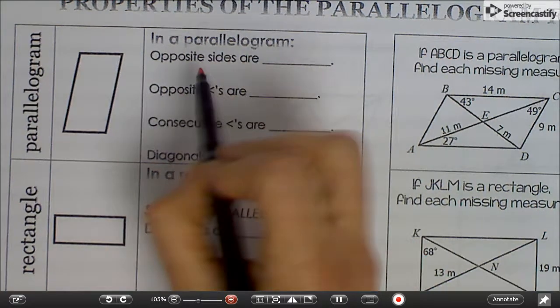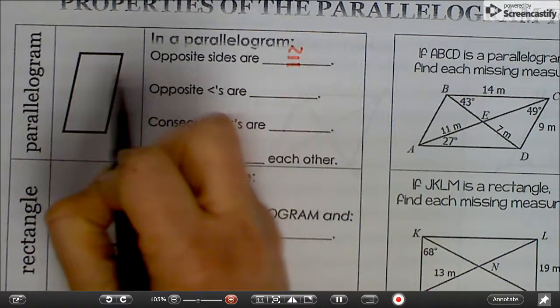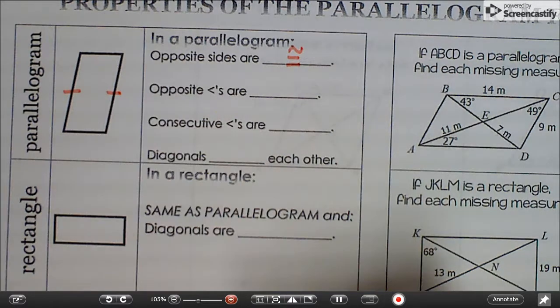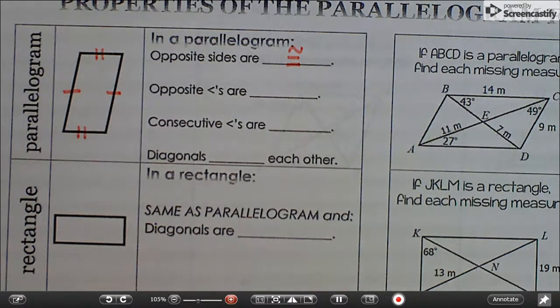So in a parallelogram, opposite sides are congruent. Opposite means the ones across from each other like that, and these are also congruent to each other. They're also parallel, but that's the definition of a parallelogram, and we're talking about the properties of a parallelogram.